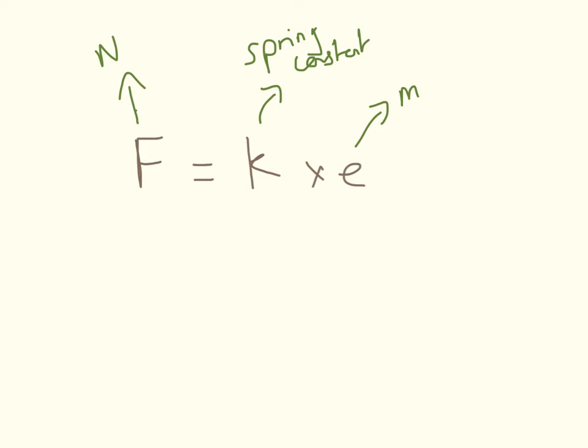we can work that out again by making K the subject of the formula. So that would be F divided by E equals K. We replace the F and the E with the units that we already have. So we have newtons and meters equal K. So our units for our spring constants are newtons per meter.